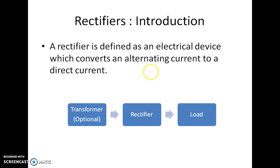Let's start with the definition of rectifier. A rectifier is defined as an electrical device which converts alternating current to direct current. That is, it converts AC to DC.